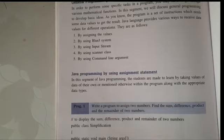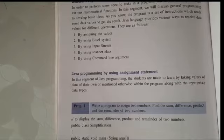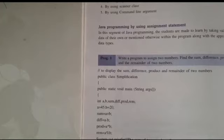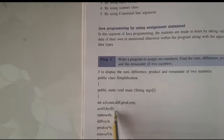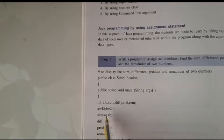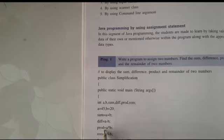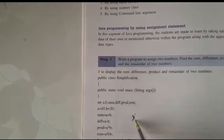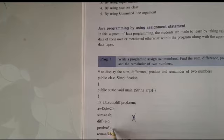First, we will assign the value: a is equal to 45, b is equal to 20. Sum is equal to a plus b — a first number plus b second number means 45 plus 20. Product is equal to a multiply b — asterisk is the multiply sign because if we use the letter x the computer will read it as x, so we use asterisk. Prod is equal to a multiply b; 45 multiply 20 is equal to 900.